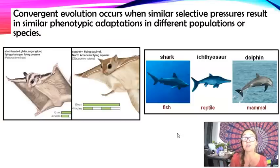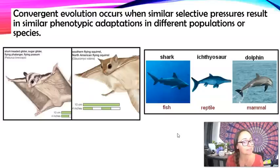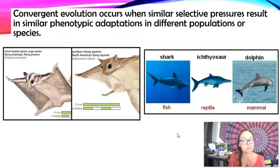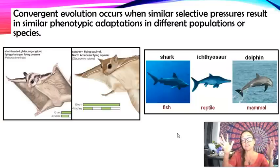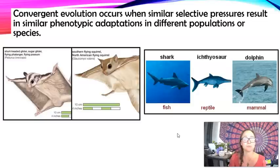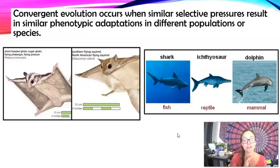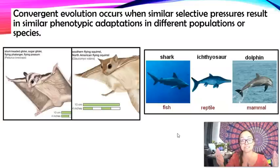Convergent evolution is one of the reasons why using morphology to build phylogenetic trees is not always your best source of evidence — it can be misleading when figuring out evolutionary history. Molecular data is better for determining relatedness. For example, if you just found a sugar glider and a northern flying squirrel and looked at them, you'd think they're related. But analyzing their DNA reveals they're actually very distantly related.